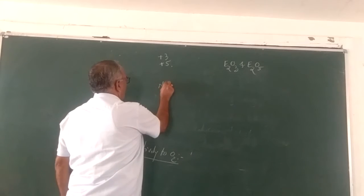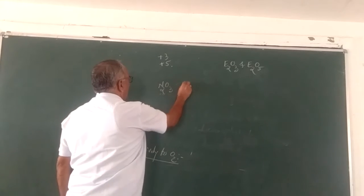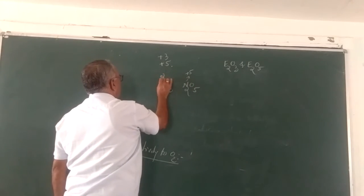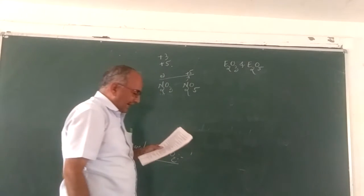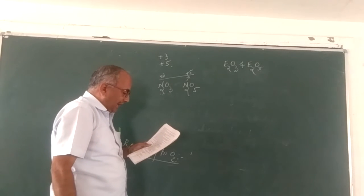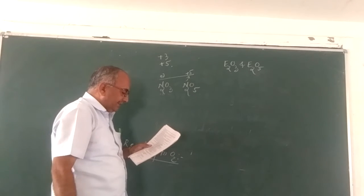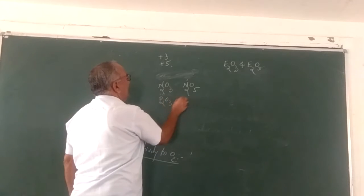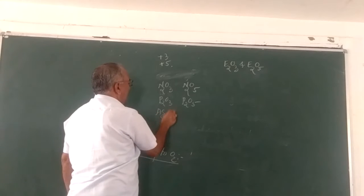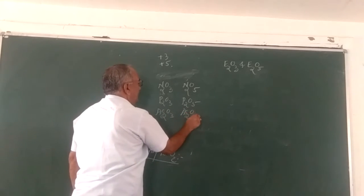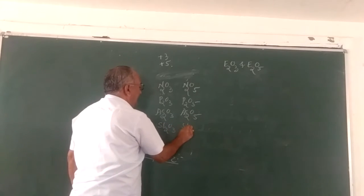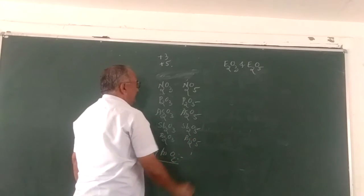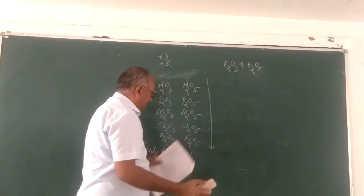For nitrogen, the trioxide has oxidation state +3 and nitrogen pentoxide has +5. The oxide of higher oxidation state is more acidic than the lower oxidation state, and the acidic character decreases down the group. Observing oxides like phosphorus trioxide and pentoxide, arsenic trioxide and pentoxide, antimony trioxide and pentoxide, and bismuth trioxide and bismuth pentoxide — the acidic character decreases significantly down the group.